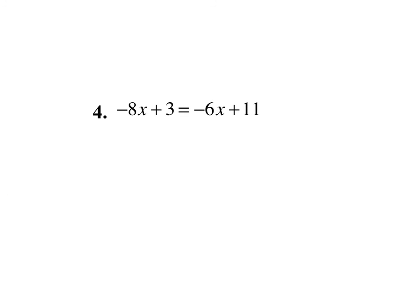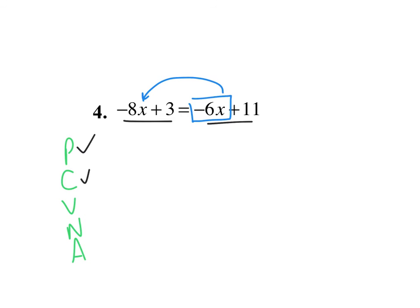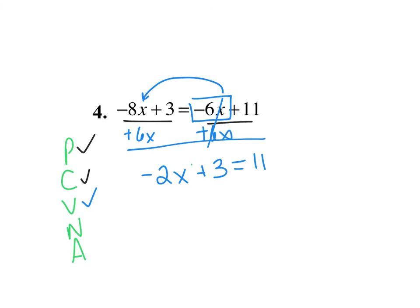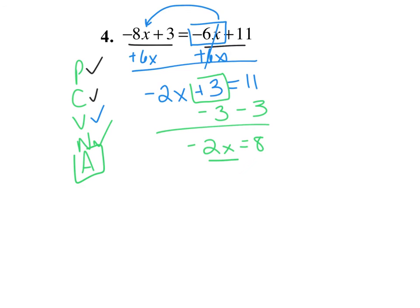Now let's do this one together. PCVNA. Do I have parentheses? Nope. Can I combine a negative 8x and a 3, or a negative 6x and an 11? Nope. Are all my variables on the left-hand side? No — I have a negative 6x on the right. To get rid of that negative 6x, I add 6x to both sides. Cancel. Negative 8x plus 6x is negative 2x, plus 3 equals 11. I subtract 3 from both sides, so I get negative 2x equals 8. I divide by negative 2, and x equals negative 4. That's your final answer.